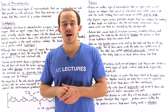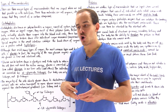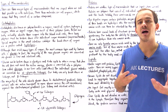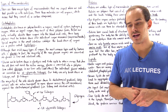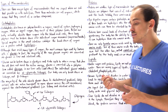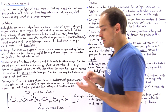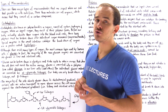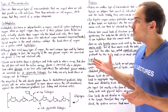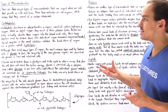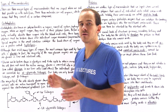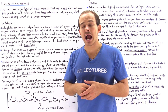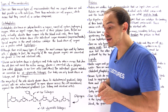Let's begin with carbohydrates. Carbohydrates are also known as sugars or polysaccharides, and they consist entirely of carbon, oxygen, and hydrogen. Carbohydrates basically exist in their polymer form when we actually ingest them in our food products.